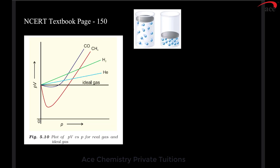Hello student friends. In today's session we will learn how real gas deviates from ideal gas — how real gases like methane deviate from ideal gas with respect to pressure, and whether real gases can have attractive forces. NCERT page number 150, states of matter chapter, has a graph of PV versus pressure available.